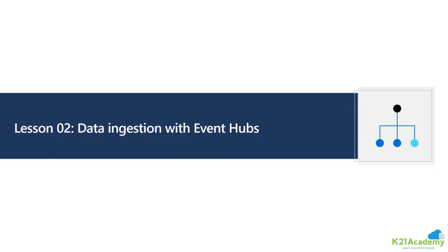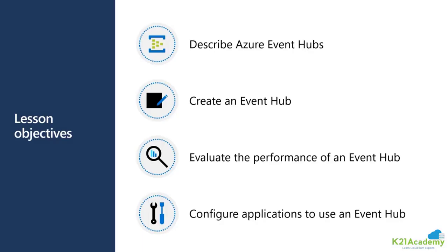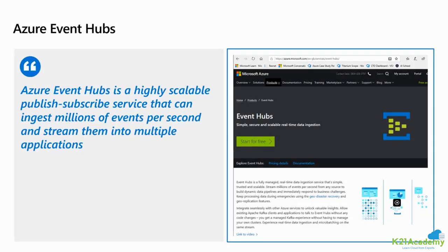In lesson number two, we'll talk about data ingestion with Azure Event Hub. We will describe Azure Event Hub, create an Event Hub, evaluate its performance, and talk about how to configure applications to communicate with Event Hub. Azure Event Hub is built on Apache Kafka, which is a very popular open-source publisher-subscriber model. Event Hub is a highly scalable publisher-subscriber service that can ingest millions of events per second and stream those events into multiple applications, which act as event processors or consumers.